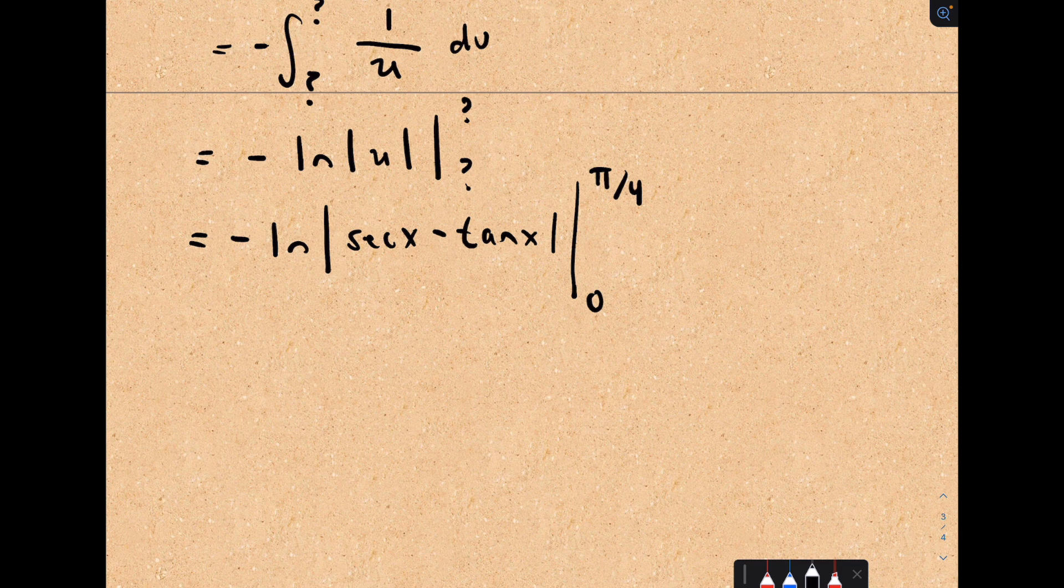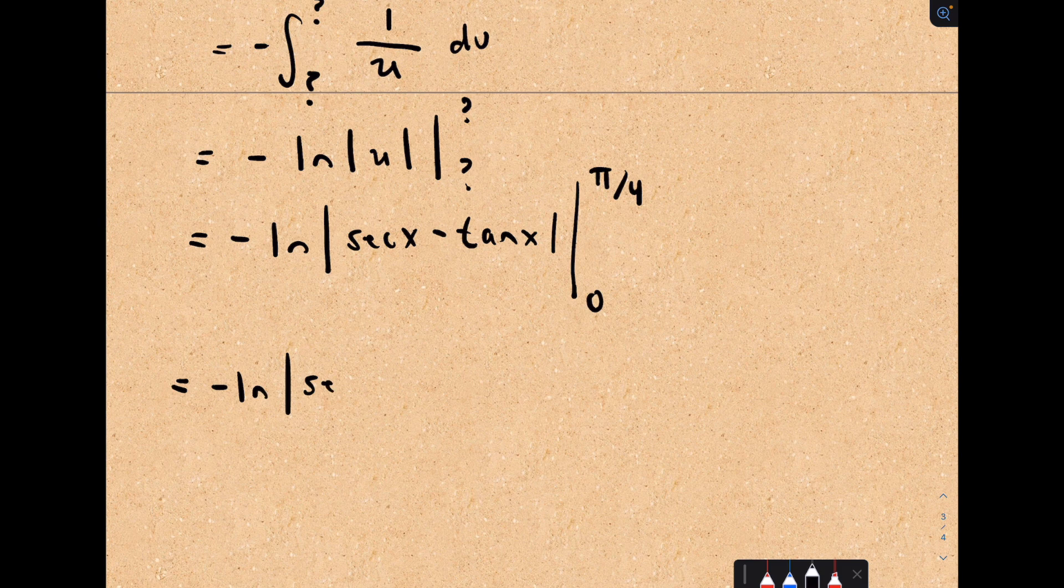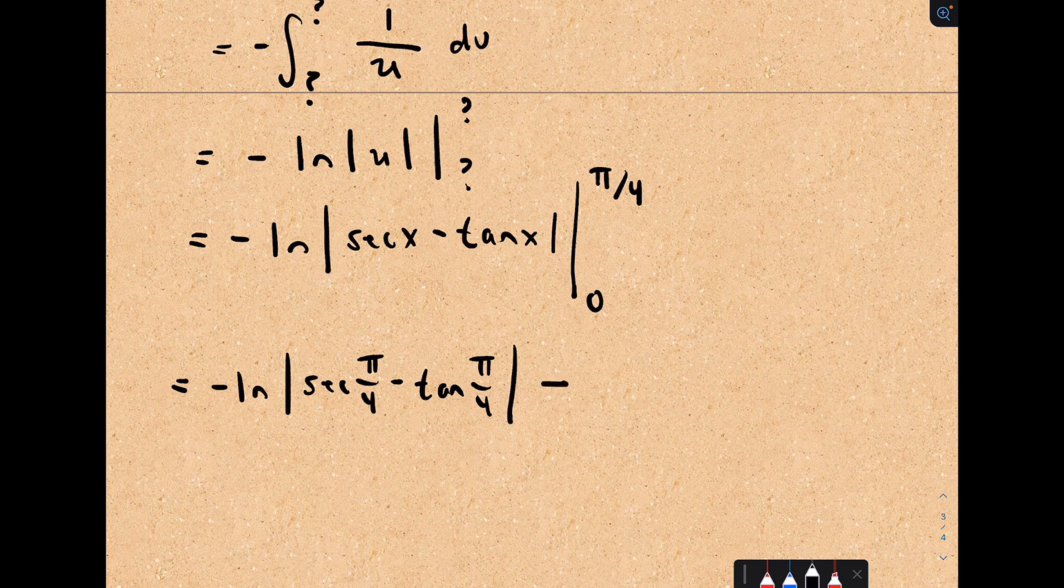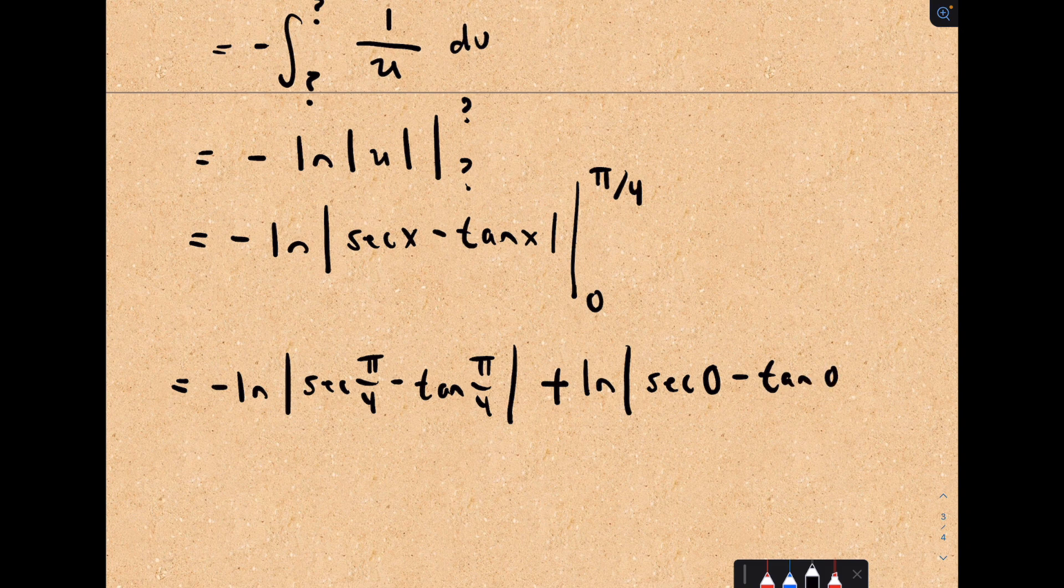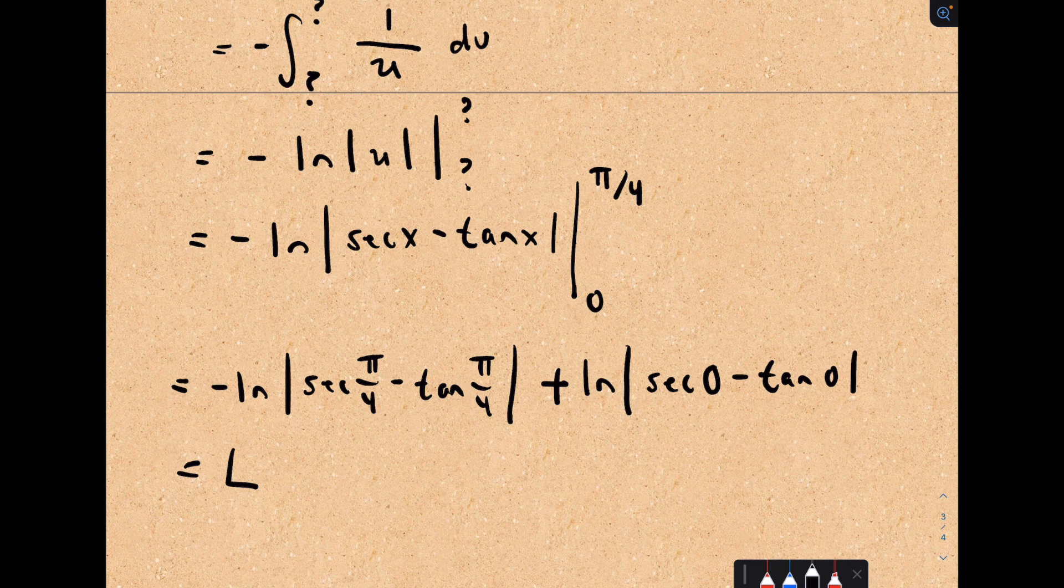I will let you compute this from here. Just plug in the upper limit of integration, secant of pi over 4 minus tangent of pi over 4, minus the lower limit, which would be negative the natural logarithm of secant of 0 minus tangent of 0. And whatever this equals, that's going to be your arc length.